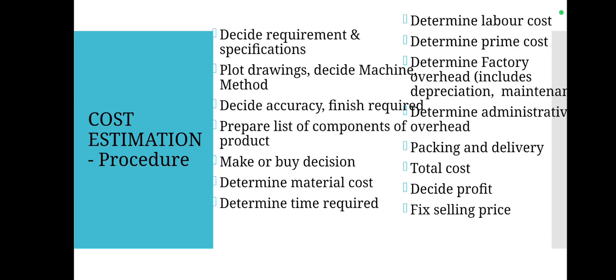Once accuracy and surface finish are fixed, we prepare the list of components required for completing the product. Then we take the make-or-buy decision — deciding whether we are going to make the component or buy it. Based on all these, we determine the material cost, which is the materials required for completing the product. This may be split into direct material cost and indirect material cost.